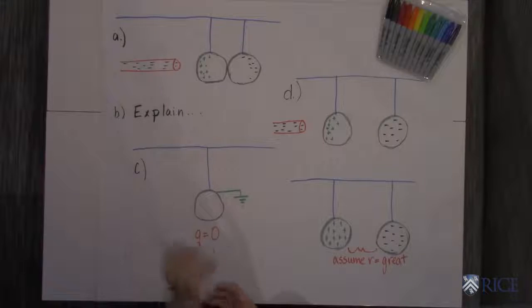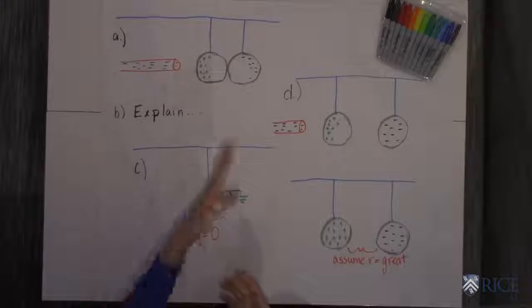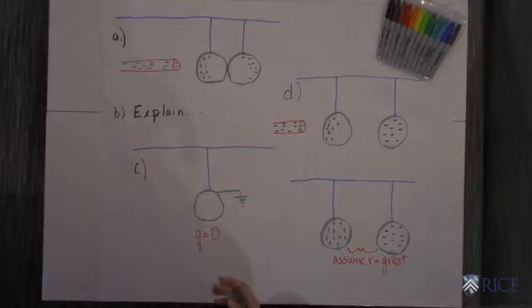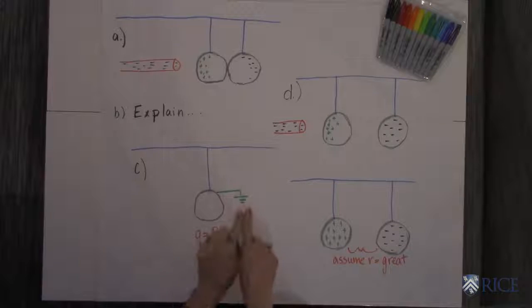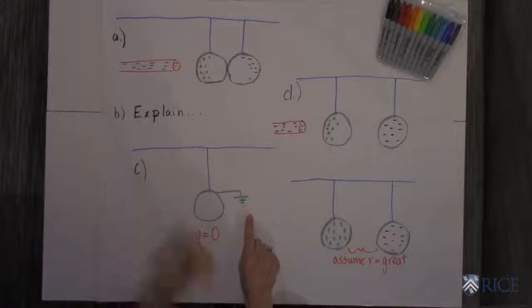The second part, C, says what happens to the charge on the second ball if all of a sudden you ground it. This little symbol right here, this is the symbol for ground.